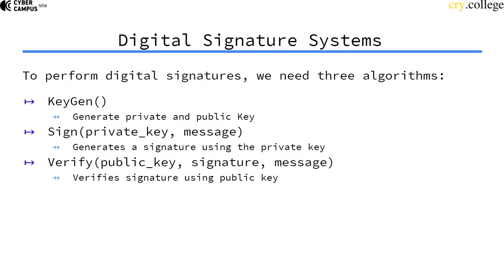In order to perform digital signatures, we need three algorithms: a key generation algorithm that outputs a private and a public key (these are usually called the key pair), a sign function that signs a message given the private key and outputs a signature, and a verify function that takes your public key, a signature, and a message, and checks if the signature is actually valid for that specific message.